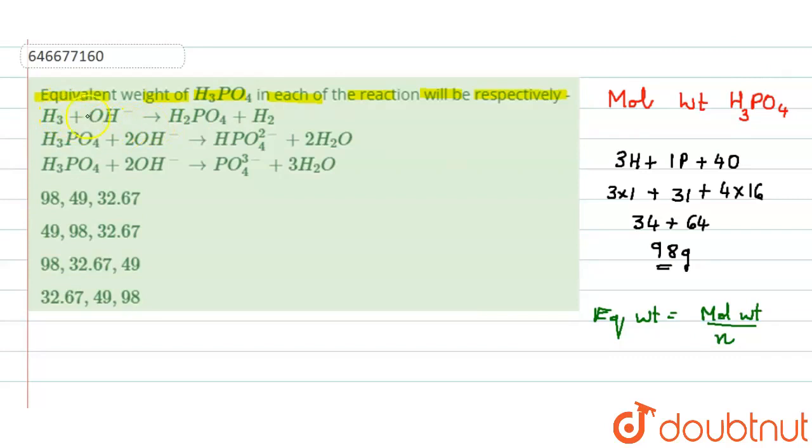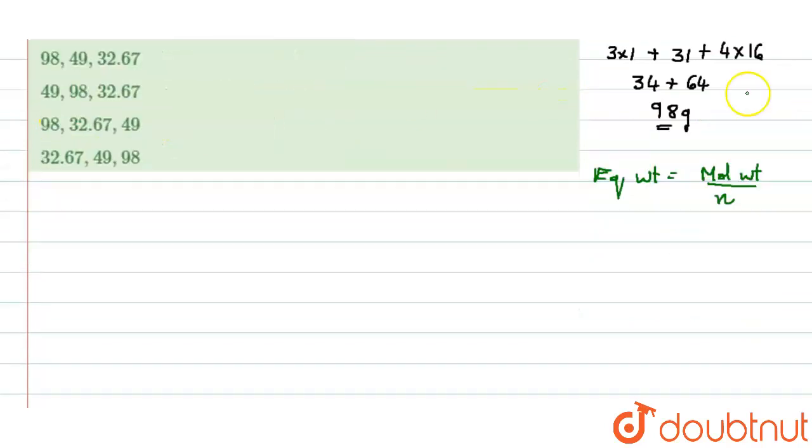So in the first case we know that it is H3PO4 to H2PO4 minus. That means it has been removed one hydrogen, so n factor in this case should be 1.